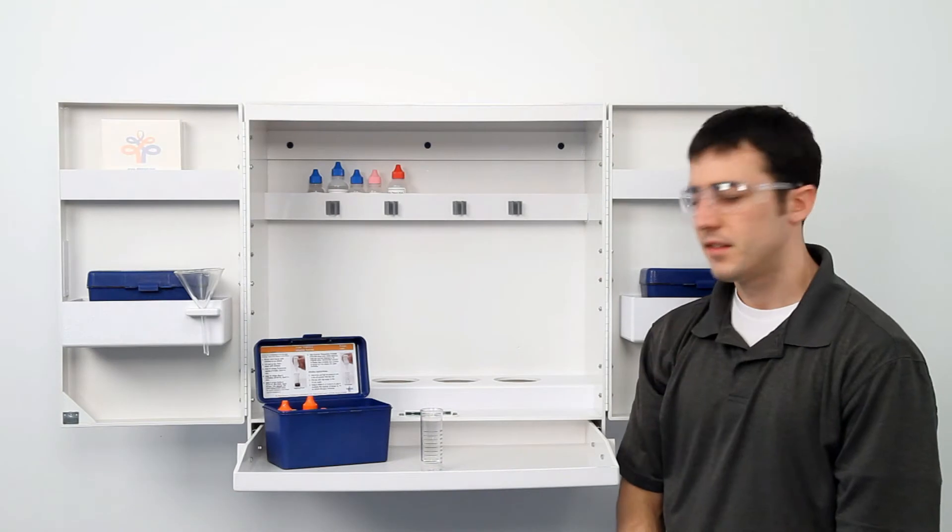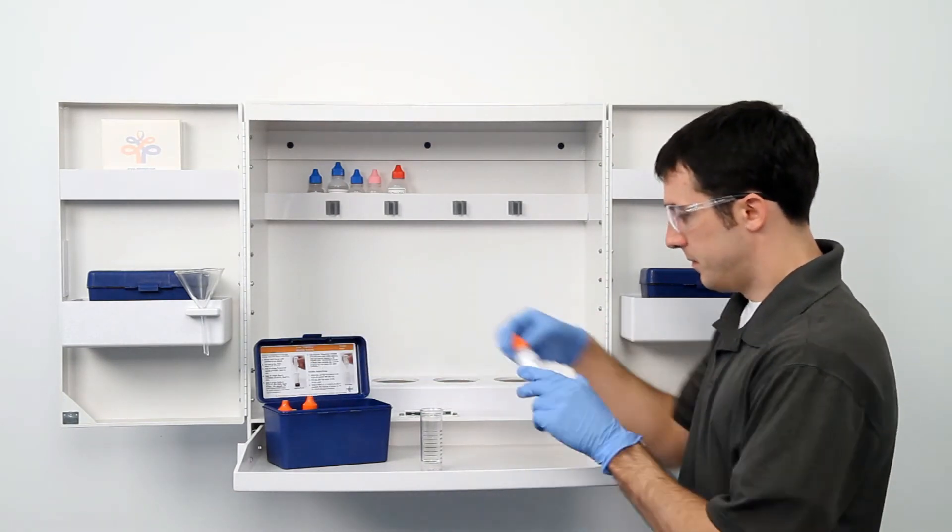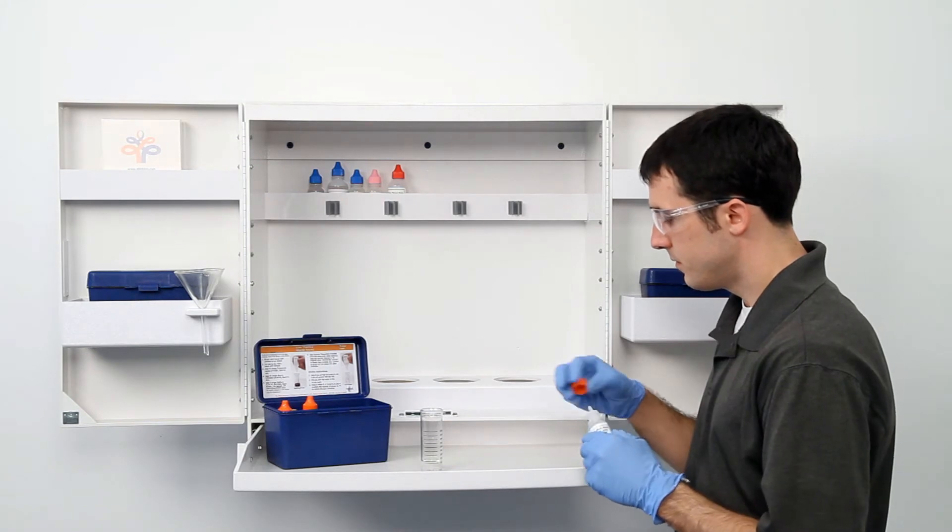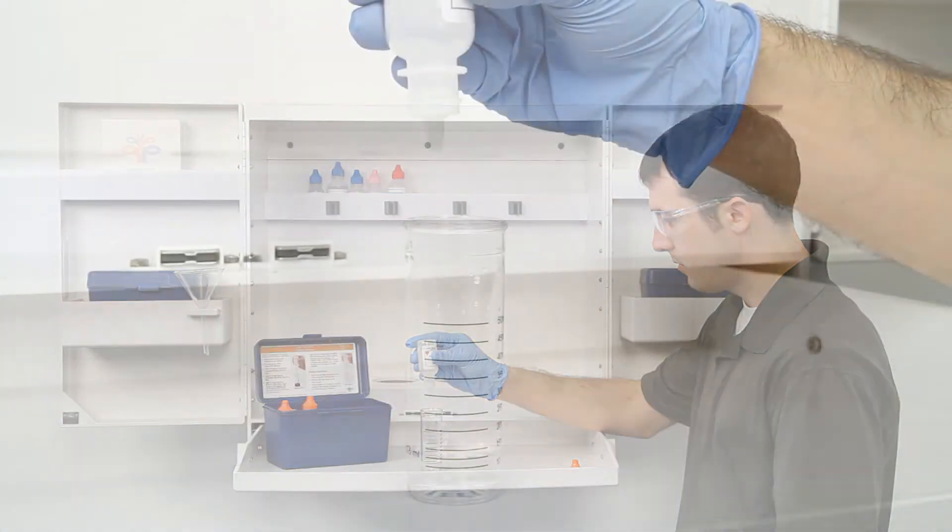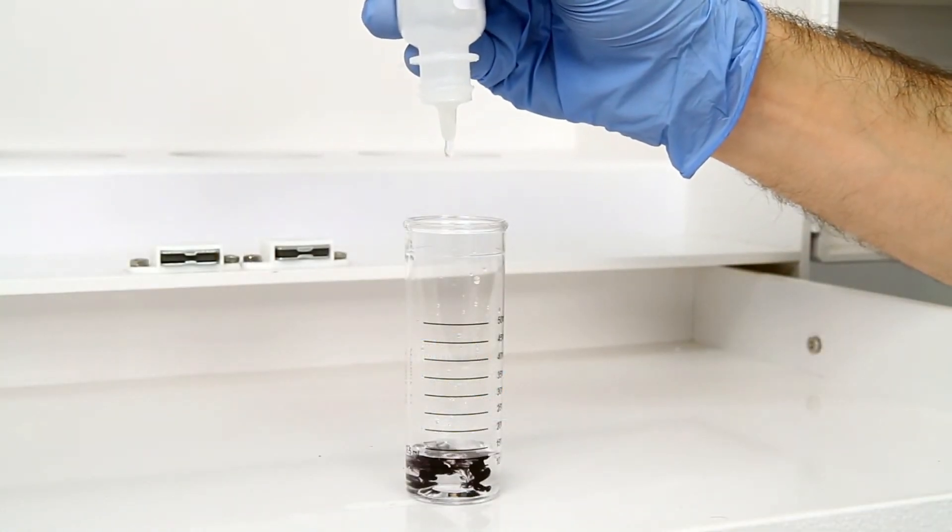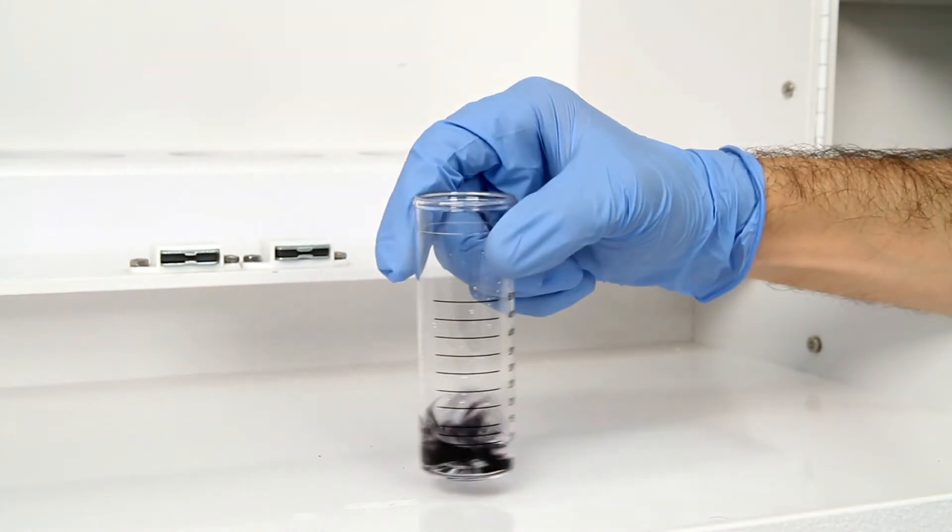The next step is to add three drops of sulfuric acid 50%. Remember to hold the bottle vertically and swirl the vial five seconds to mix the reagents. If chlorine is present, the sample will turn a blue-black color. In caustic solutions, more drops may be necessary.